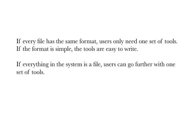If every file has the same format, users only need one set of tools. If the format is simple, the tools are easy to write. The format is plain text files with one record per line — almost all Unix tools process files in this format. If everything in the system is a file, users can go further with one set of tools. The extreme of this is device files, in which the interface to an operating system module representing hardware is represented as a node in the file system, which you can use the file name as parameters to command line tools.